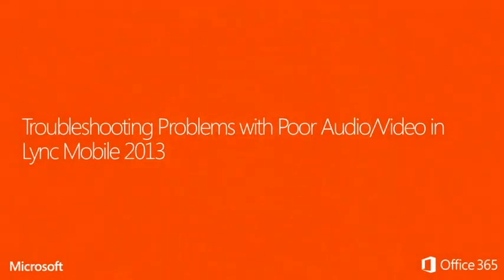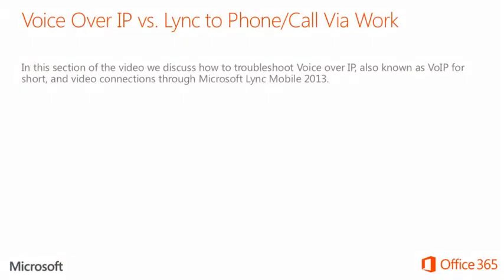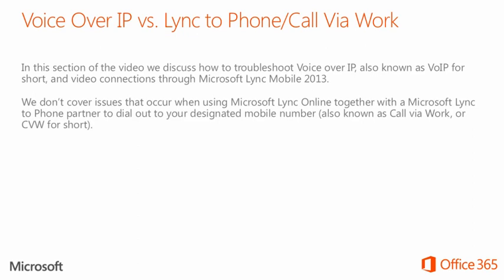Lastly, I'll show you how to troubleshoot poor audio and video connections using Lync Mobile 2013. In this section, we discuss how to troubleshoot Voice over IP, also known as VoIP, and video connections through Microsoft Lync Mobile 2013. We don't cover issues that occur when using Microsoft Lync Online together with Microsoft Lync to Phone Partner to dial out to your designated mobile number, also known as Call Via Work, or CVW for short.